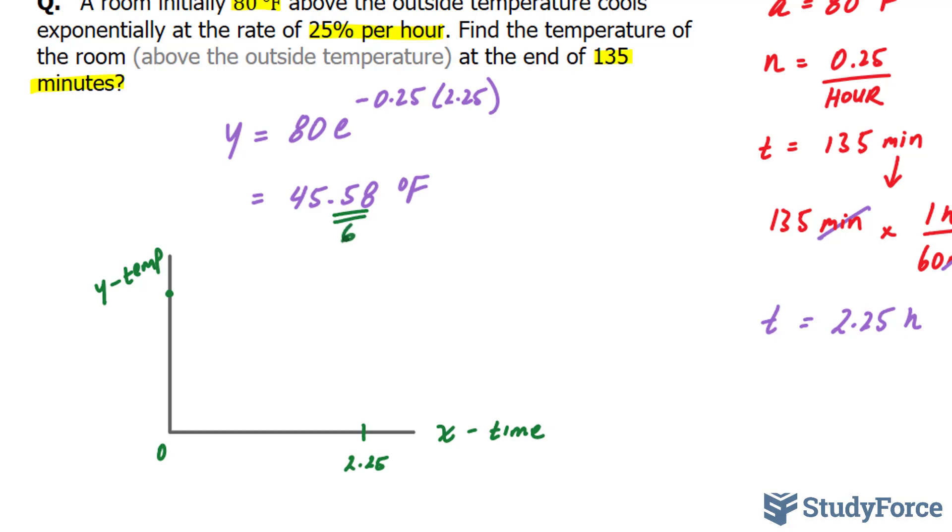Since it is decreasing exponentially, we can assume that it goes down really fast, and then it begins to level off around the temperature 45.6.